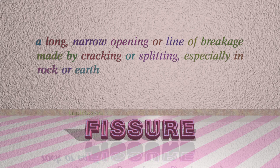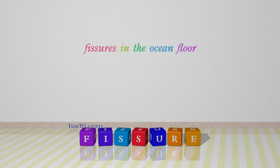Number twelve: Fissure. Which means a long, narrow opening or line of breakage made by cracking or splitting, especially in rock or earth. For example: fissures in the ocean floor.